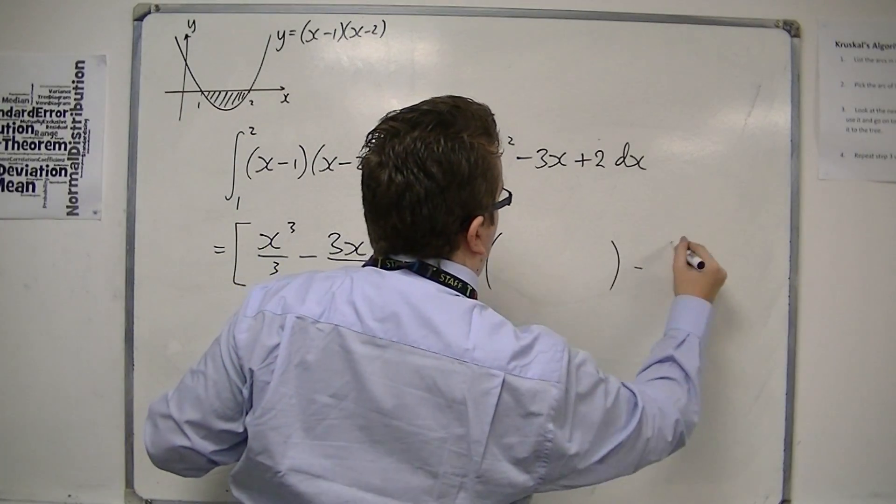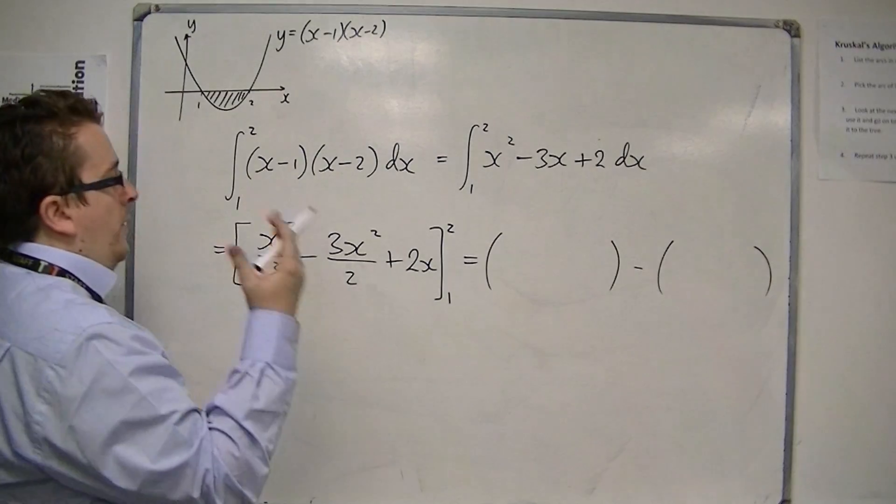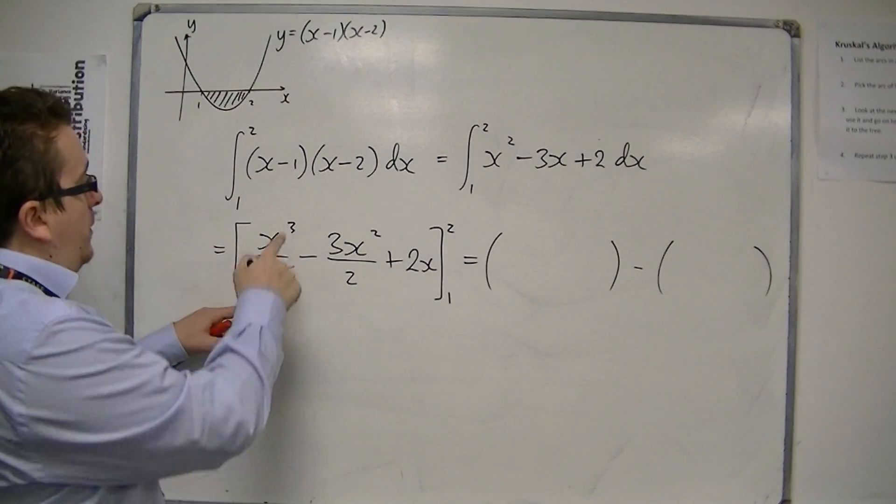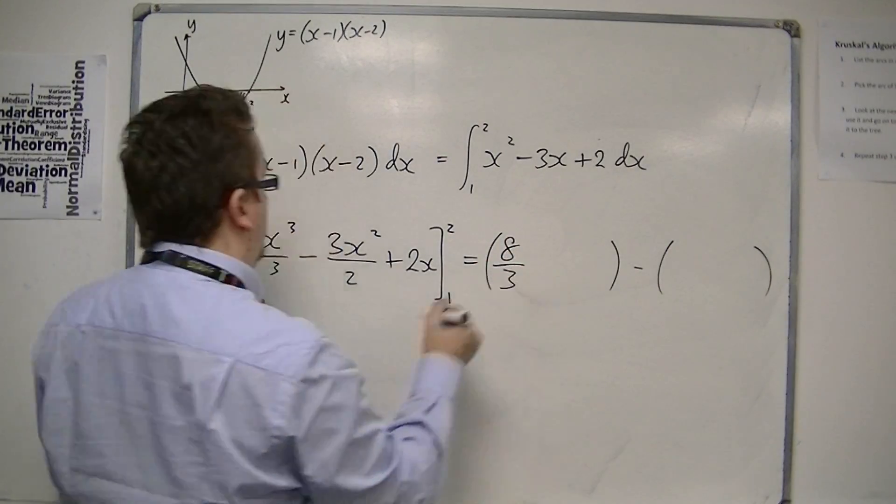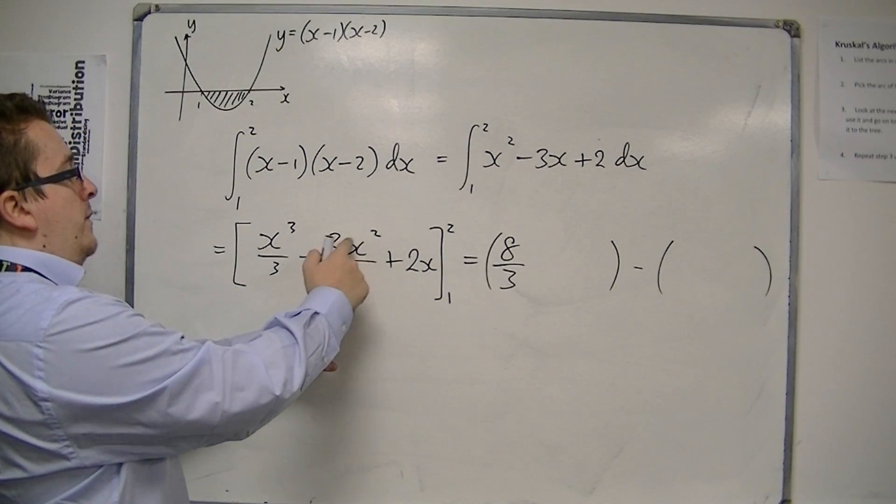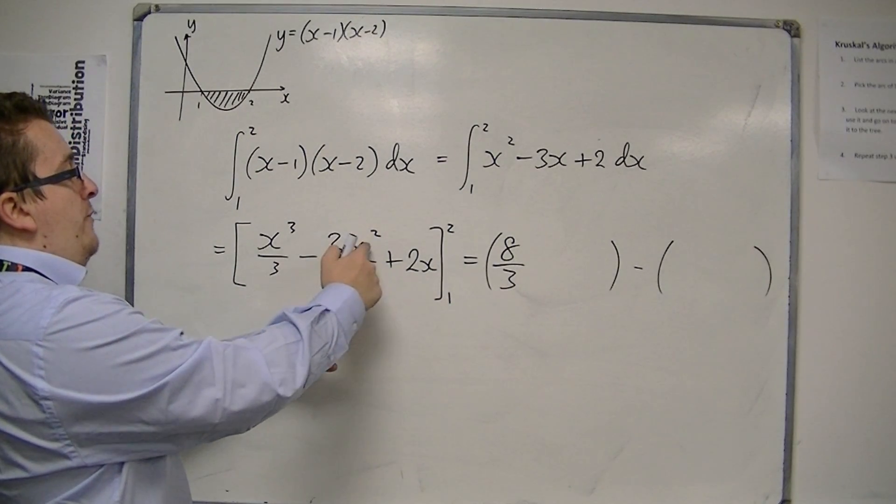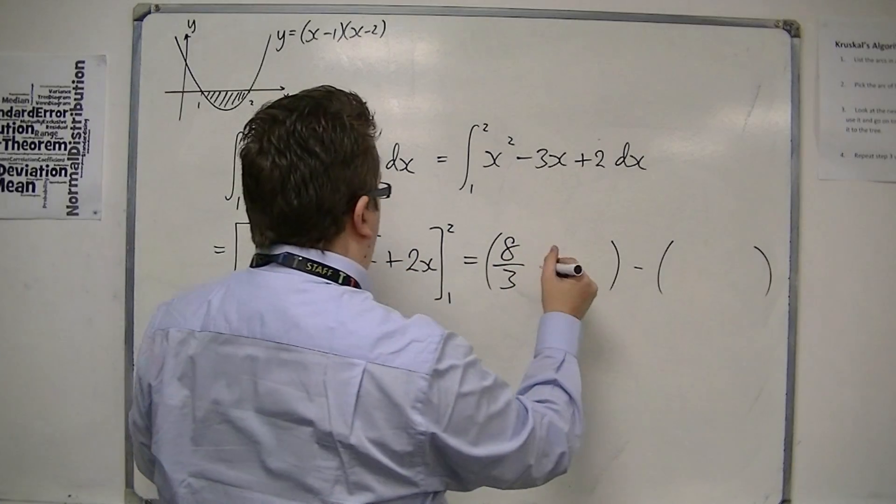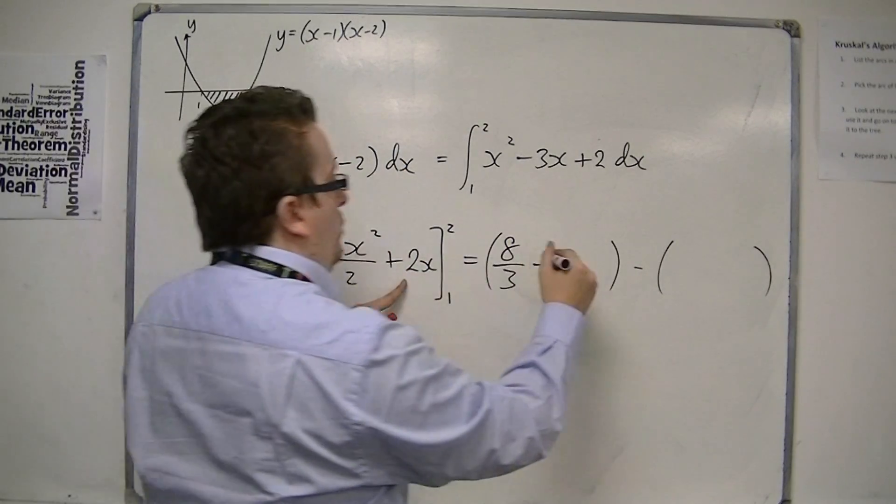So we're going to get one bracket, take away another bracket. Put in the 2 first. So we get 2 cubed over 3, so that's 8 over 3. We get 2 squared is 4, so 3 times 4 is 12, divided by 2 is 6, so minus 6. And 2 times 2 is 4.